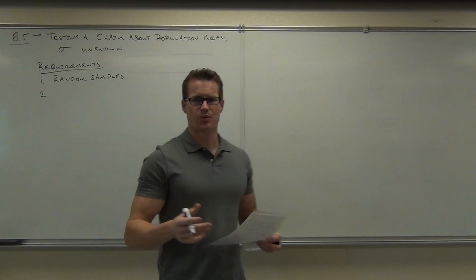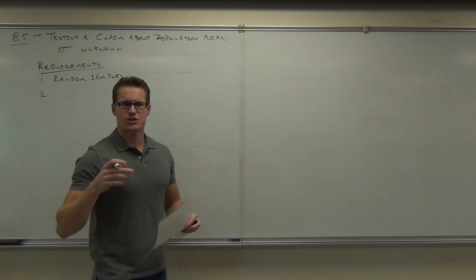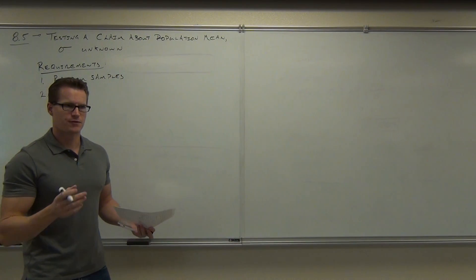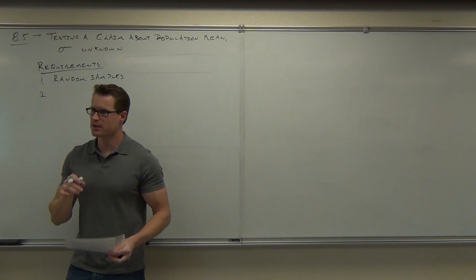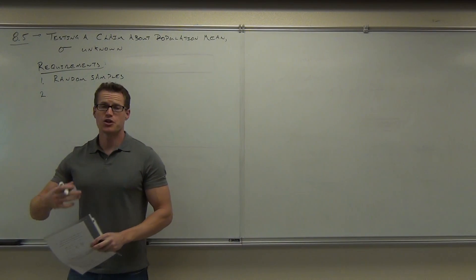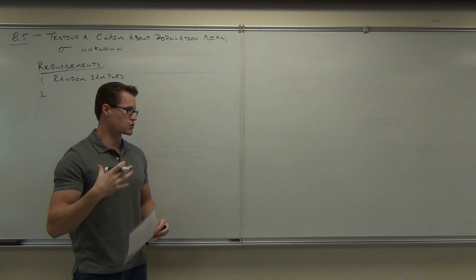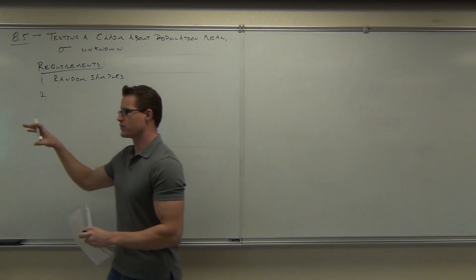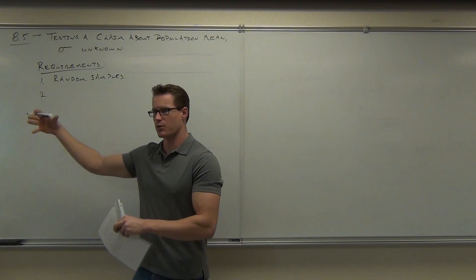Requirement two is, it's weird to have a requirement, but your sigma shouldn't be known. If your sigma was known, if your population standard deviation was known, you wouldn't even be doing this. You'd be in the last section. You'd be in Section 8.4, right? Because you'd know sigma, all the requirements would be met.